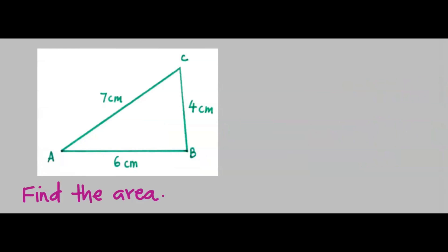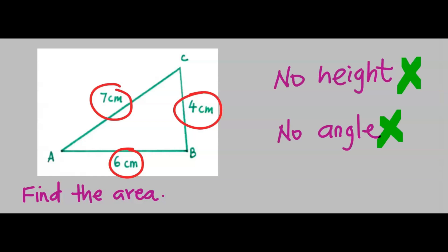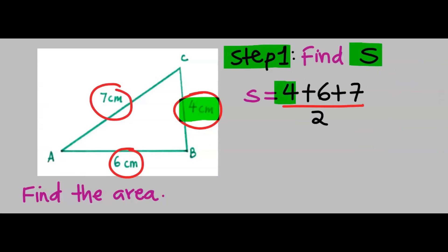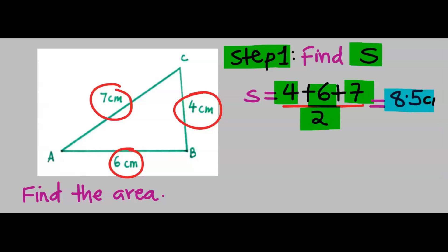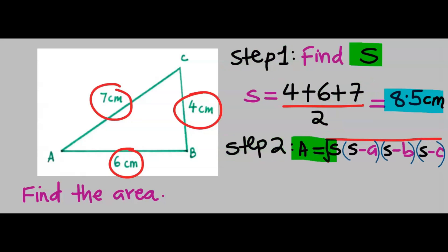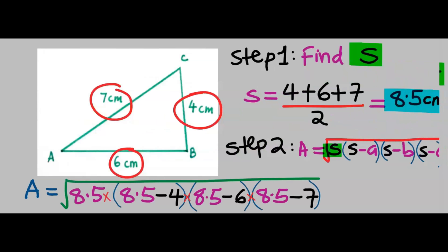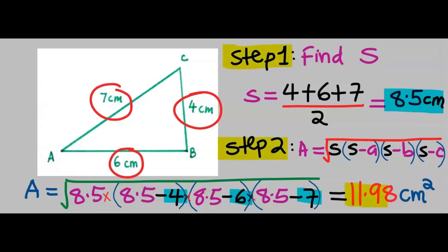Let's find the area of this triangle. Here we are given three sides, but no height and no given angle. Step 1: find the semi-perimeter — add the three sides of the triangle and divide by two. We get 8.5 centimeters. Step 2: find the area of the triangle by applying Heron's formula. Wherever we see s, substitute 8.5, and substitute for the three sides. If you compute carefully, our answer is 11.98 centimeters squared to two decimal places.